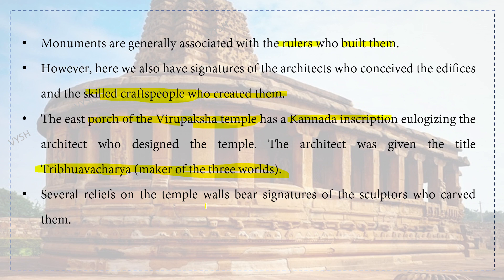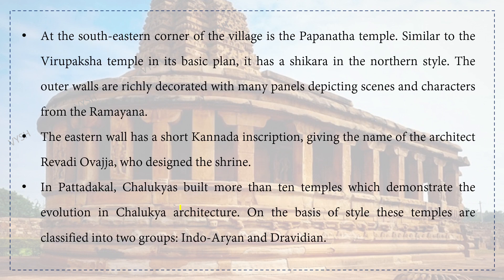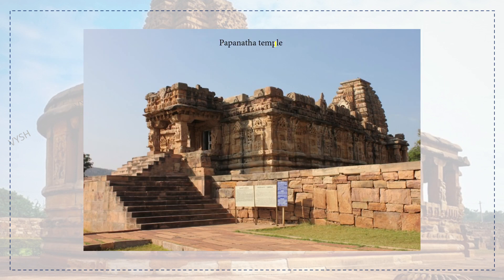Several reliefs on the temple walls bear signatures of sculptors who carved them. At the southeastern corner of the village is the Papanatha temple, similar to the Virupaksha temple in its basic plan but with a shikara in the northern style. The outer walls are richly decorated with panels depicting scenes and characters from the Ramayana. The eastern wall has a short Kannada inscription giving the name of architect Revadi Ovajja who designed the shrine. In Patadakal, the Chalukyas built more than 10 temples demonstrating the evolution in Chalukyan architecture, classified into two groups — Indo-Aryan and Dravidian.